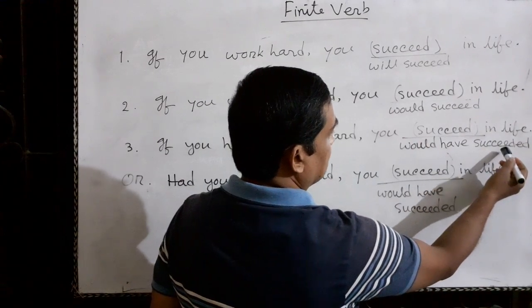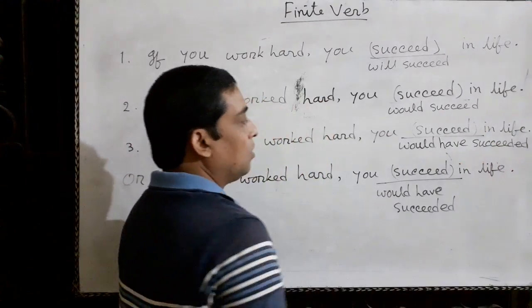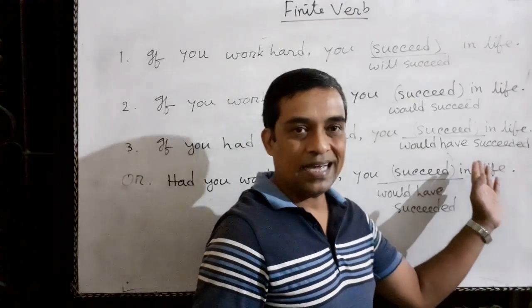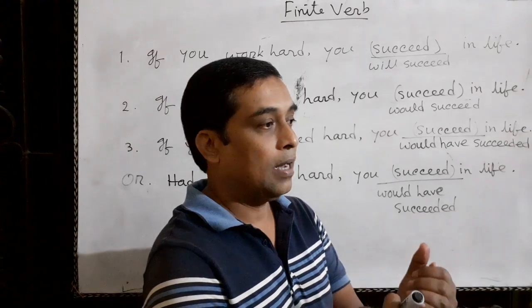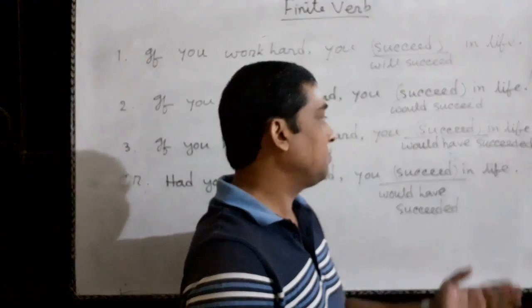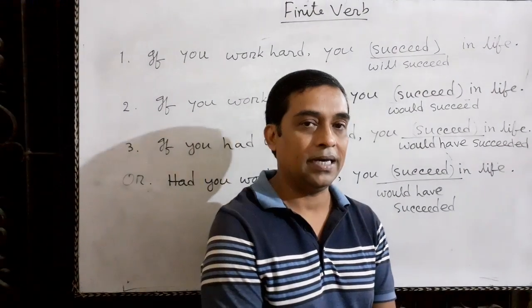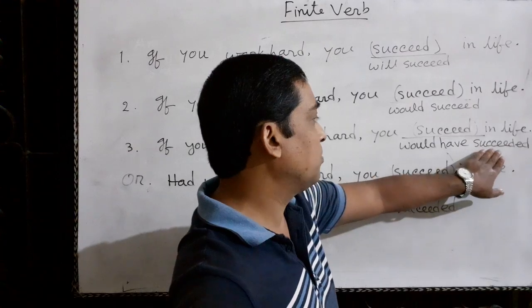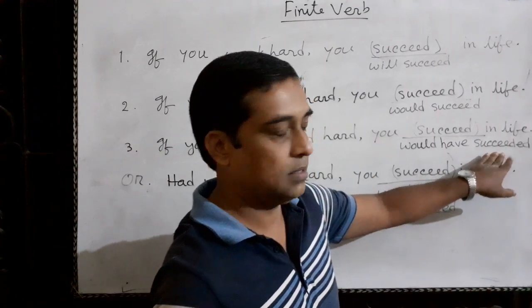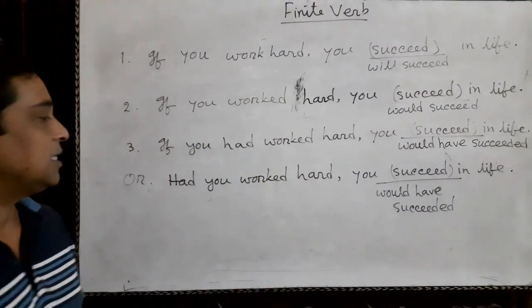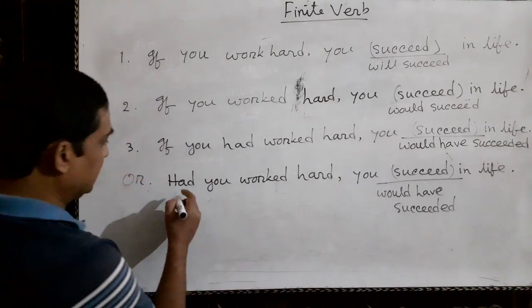After 'would have / could have / might have,' we must write the past participle form of the main verb — because after a 'have' verb, we always write the past participle. So the correct form here is 'would have succeeded,' and this sentence can also be written in another way.